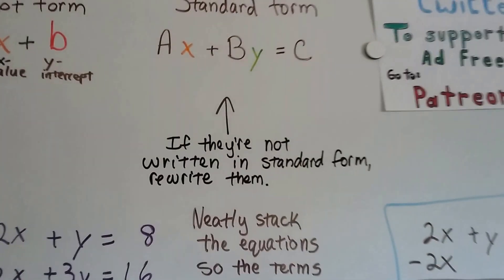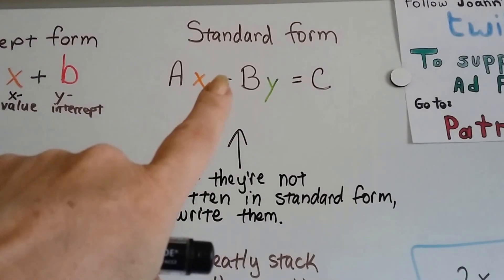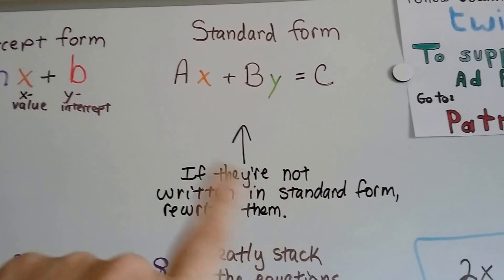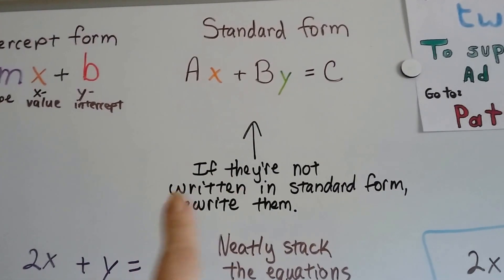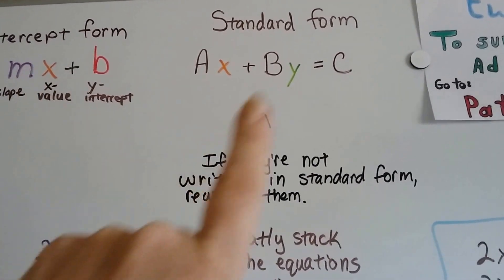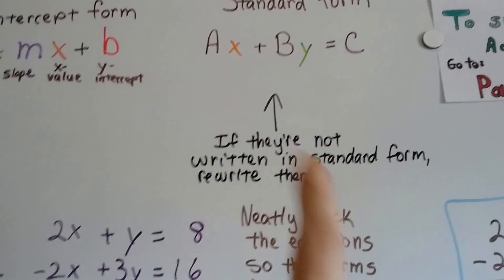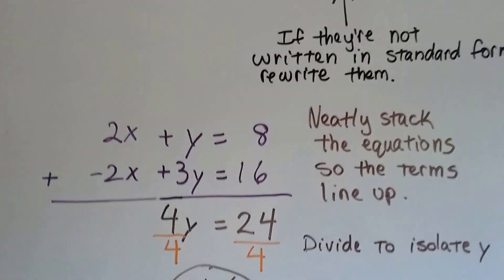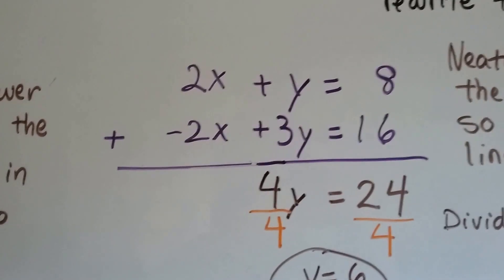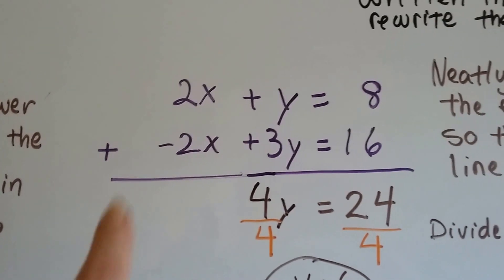So remember, if they're not written in standard form, rewrite them to make it easier on yourself. Sometimes the equations won't line up because one is written in one way and another one's written in another way. Make sure they're written in the same form. So these two, this system of equations is written in the same form, in the standard form.